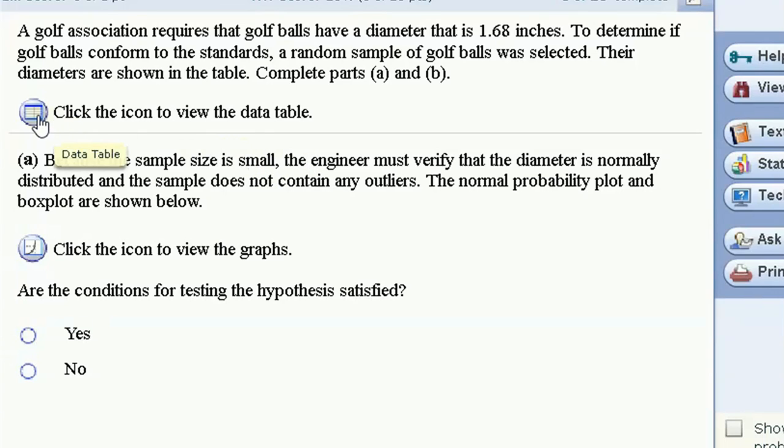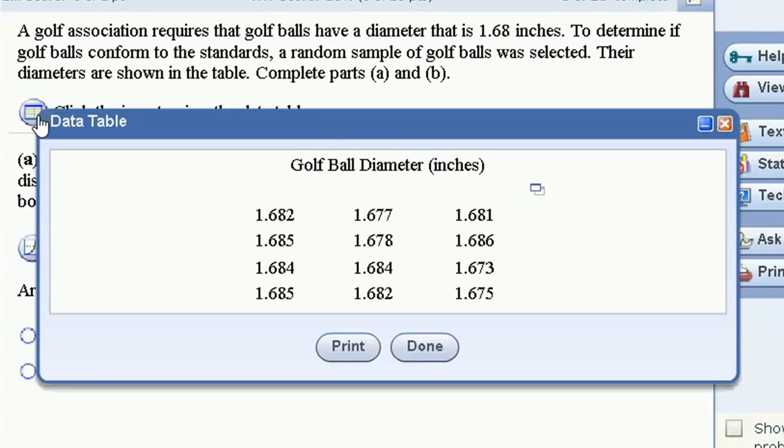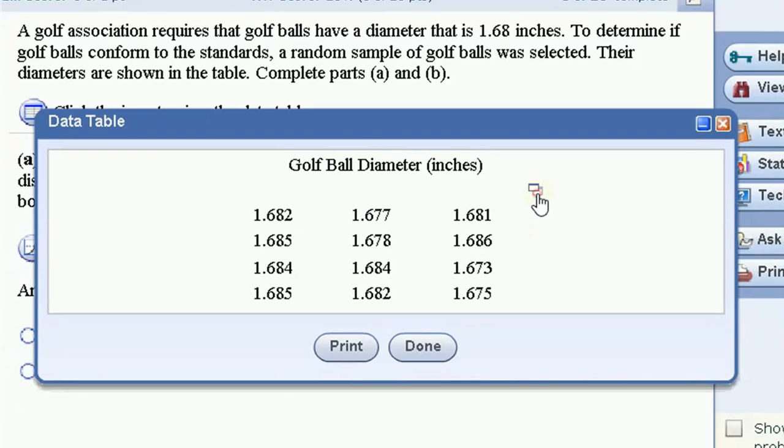Let's take a look at this table data. We have 12 golf balls measured. Let's bring this into StatCrunch, where we can actually work with it. Bring this smaller.